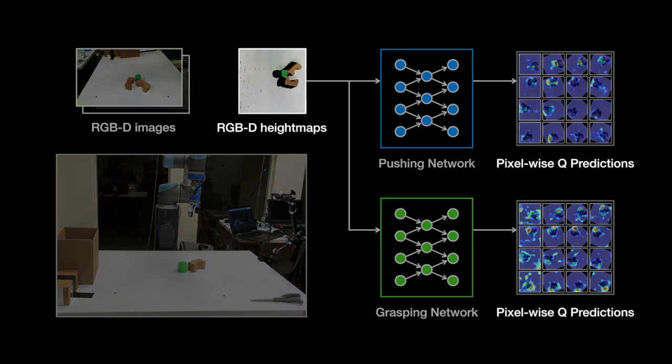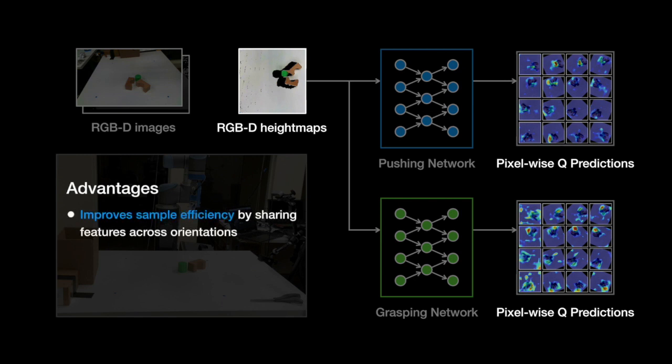Our method of rotating input height maps improved sample efficiency by enabling the networks to share one set of learned features across multiple different pushing directions and grasping orientations. In our experiments, we were able to successfully learn pushing and grasping policies from scratch in less than 2,000 trial and errors. At 10 seconds per robot action, this amounts to just five and a half hours of wall clock training time.